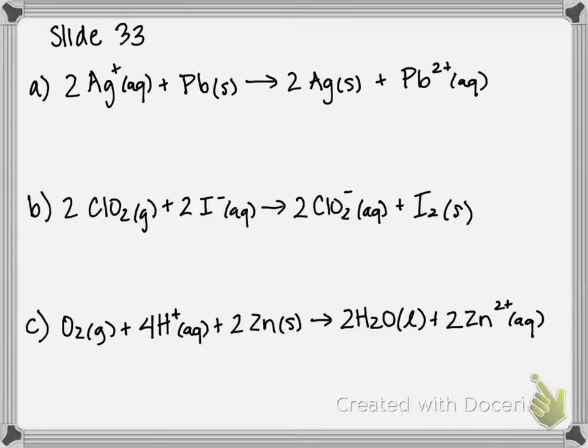So let's start with example A. So first, strategy for this is to figure out what's oxidized and what's reduced, because that's going to tell us the order that we're writing it in. So silver is plus 1, lead by itself is 0, silver by itself is also 0, and then lead 2 plus is plus 2. So silver is being reduced, and lead is being oxidized. So we're going to start with lead.